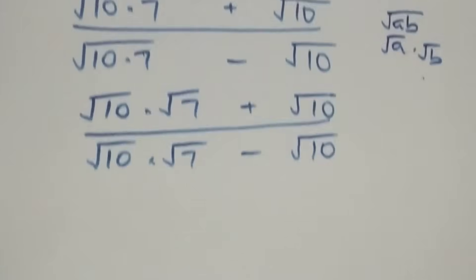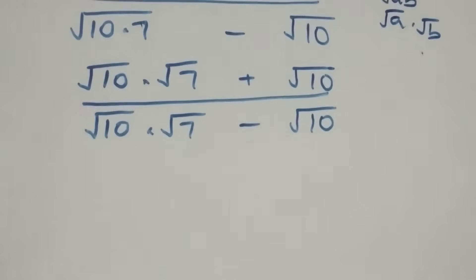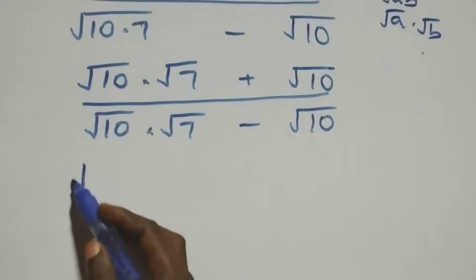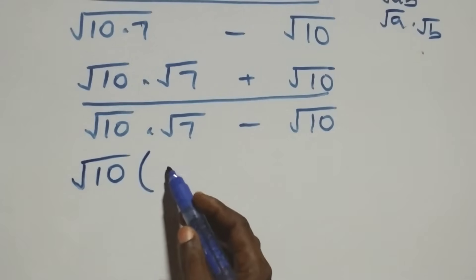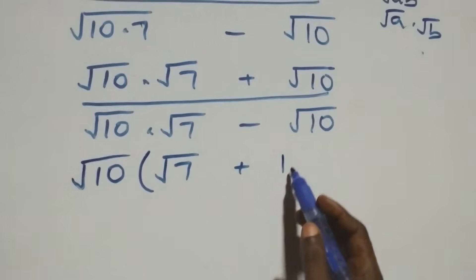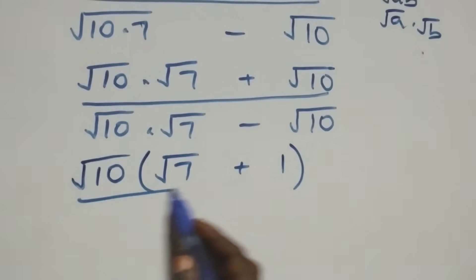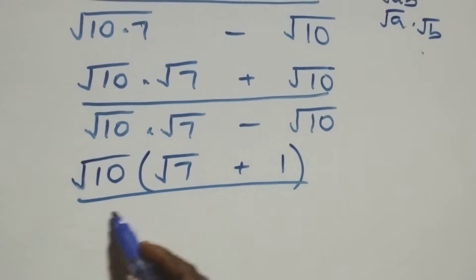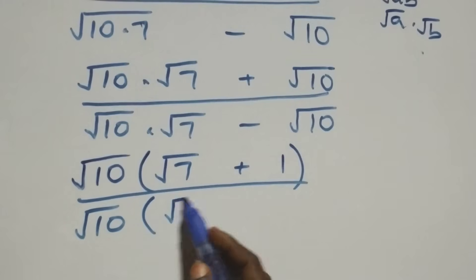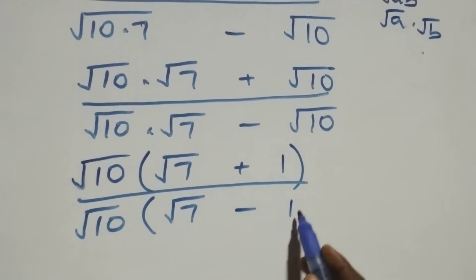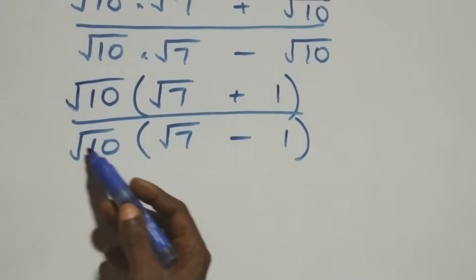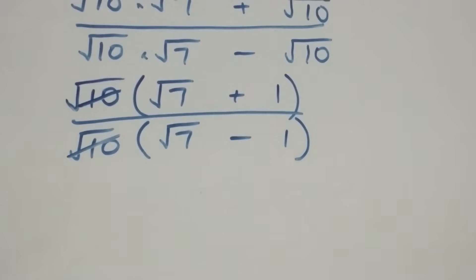Next, we factor out √10 from both numerator and denominator. The numerator becomes √10 · (√7 + 1) and the denominator becomes √10 · (√7 − 1). The √10 terms cancel with each other.